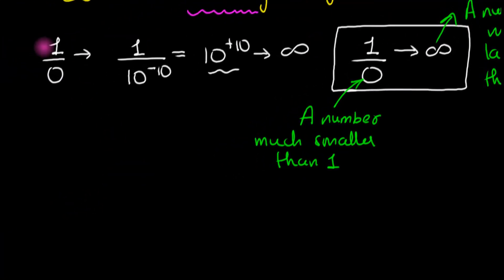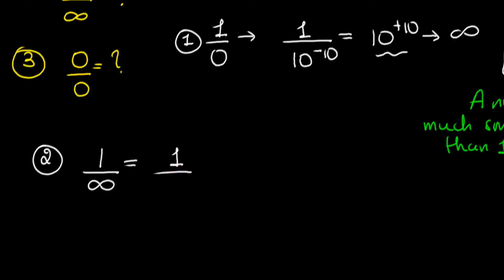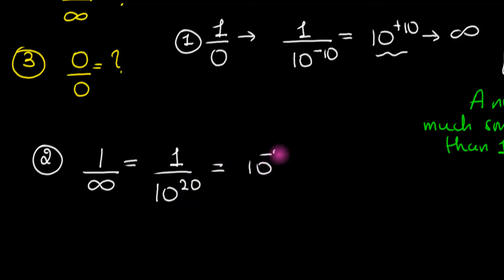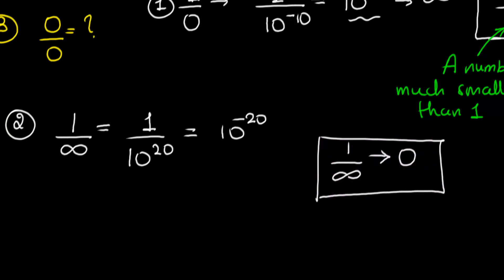Now let's answer question 2: what happens if you have 1 divided by infinity? You should be able to understand this yourself. We have to divide 1 by a relatively large number — much bigger than 1. Let's say 10 to the 20. We know the answer is 10 to the minus 20, and notice that this number is much smaller than 1. This tells us that 1 over infinity must be tending to become 0.